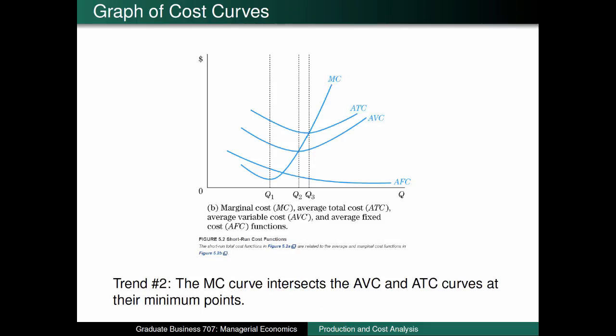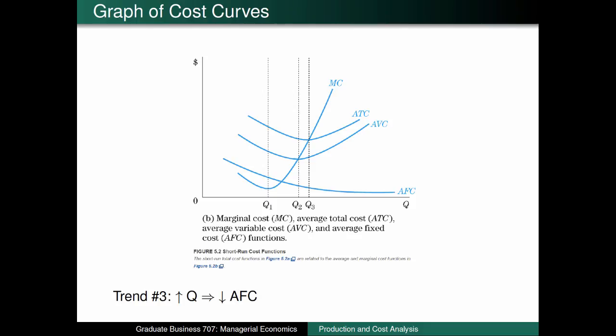Second, notice that the minimum point of the average total cost and average variable cost curves occur when each of them intersects the marginal cost curve. Again, this is because of the relationship we discussed about comparing new values of marginal cost with previous values of average total cost. The same logic applies with marginal cost and average variable cost. Third, the average fixed cost curve is always downward sloping since the value of fixed cost — which was $50 in our numerical example — would be spread out over more and more pizzas as quantity increases.